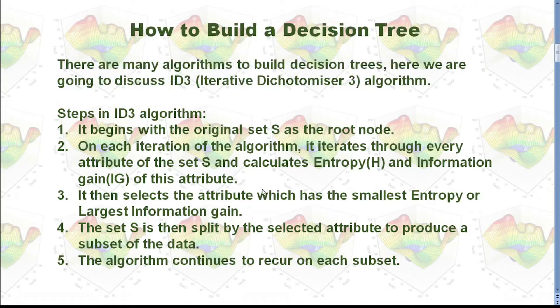There are many algorithms to build decision trees. Here, we are going to discuss the ID3 algorithm. What should we do with ID3 algorithm? First, we start with the root node. And then we are going to go through all the features or all the attributes of the data points and calculate entropy and information gain. And then we will select the attribute which has the smallest entropy or largest information gain. And after that, we are going to use this feature to split all those data points. And then we are going to use this algorithm to continue to recur on each subset.